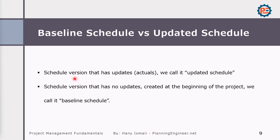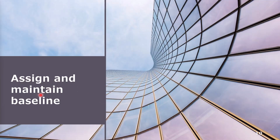A schedule version that has updates is called the actual or updated schedule. A schedule version with no updates, created at the beginning of the project or a phase, is called the baseline schedule. We cannot change anything in the baseline schedule — we always keep comparing actuals to the baseline. In order to do this in Primavera, we need to assign and maintain the baseline.